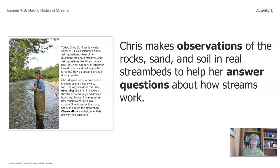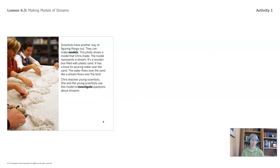Observations can help scientists answer their questions. Chris makes observations of the rocks, sand, and soil in real stream beds to help her answer questions about how streams work. Scientists have another way of figuring things out. They can make models. This photo shows a model that Chris made. The model represents a stream. It's a wooden box filled with plastic sand. It has a hose for pouring water over the sand. The water flows over the sand like a stream flows over the land. That rhymes. Chris teaches young scientists. She and the young scientists use this model to investigate questions about streams.